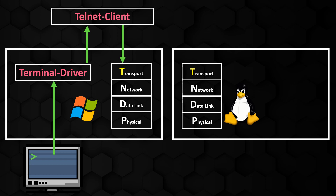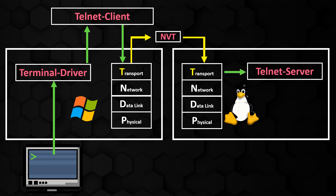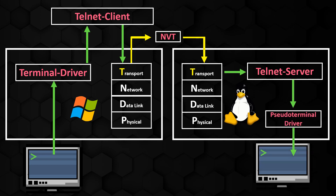This format is also called universal language. The Network Virtual Terminal, NVT for short, describes the standard that both communication partners should follow. The information processed and sent by the user in this way is passed to the Telnet server at the destination, which translates the user's input from the universal language into a language that the destination system understands. The Telnet server is the counterpart of the Telnet client. The result is passed to the pseudoterminal driver, which then executes the commands.